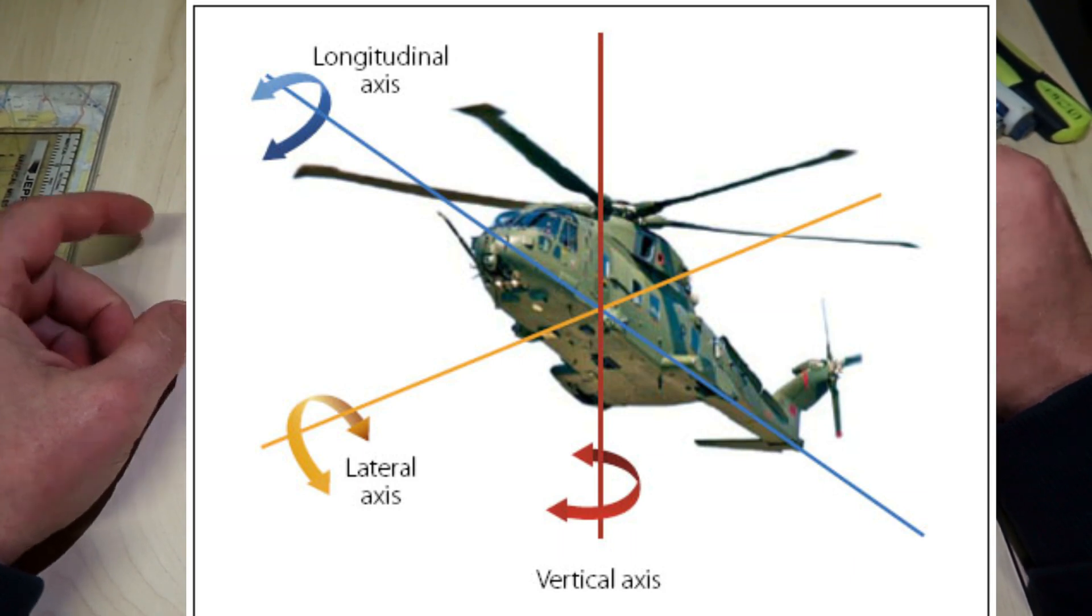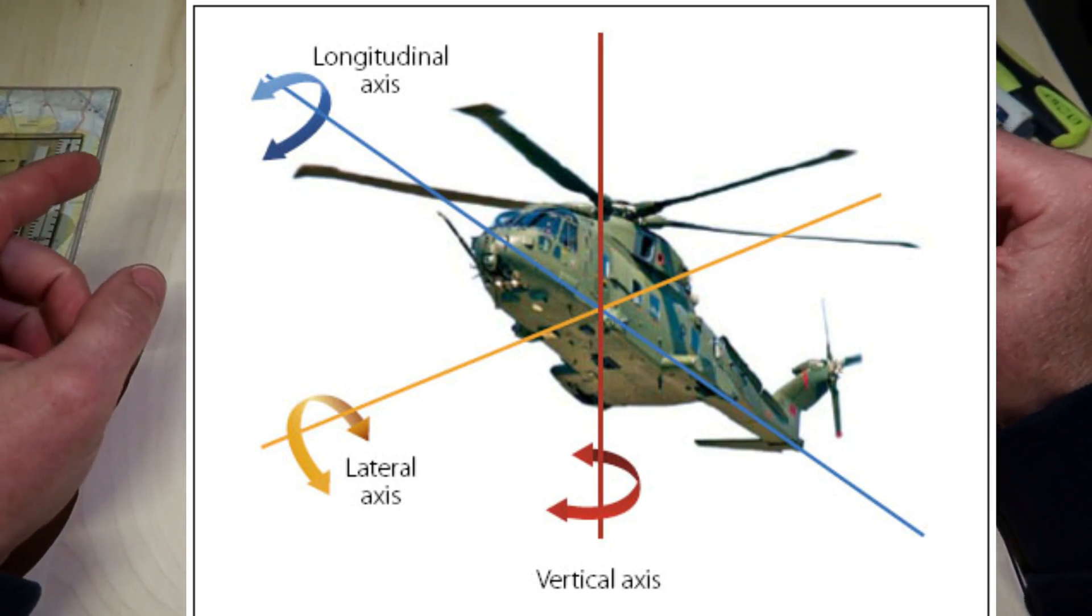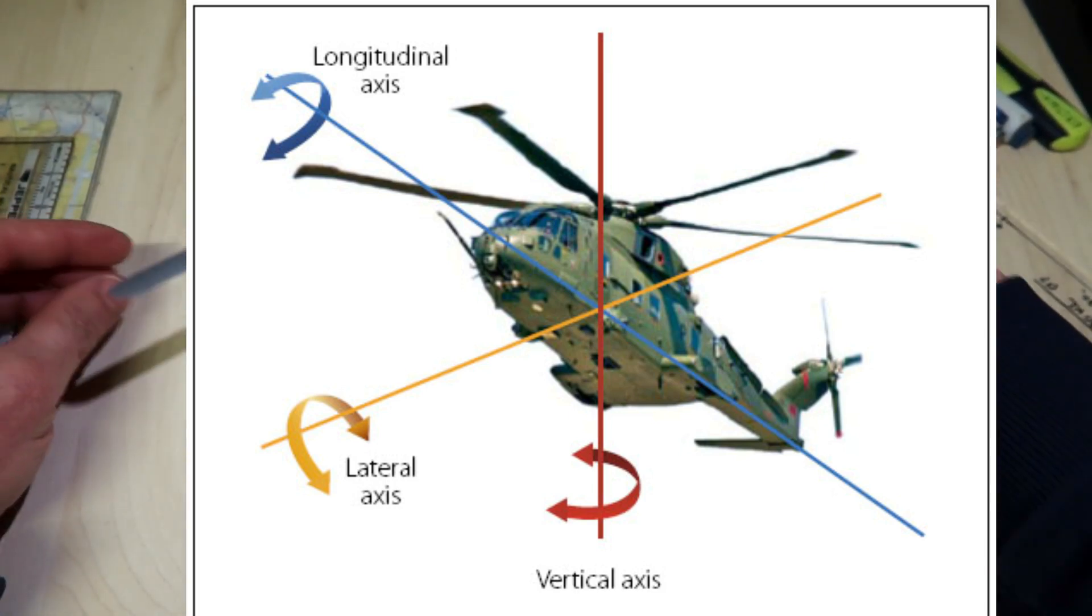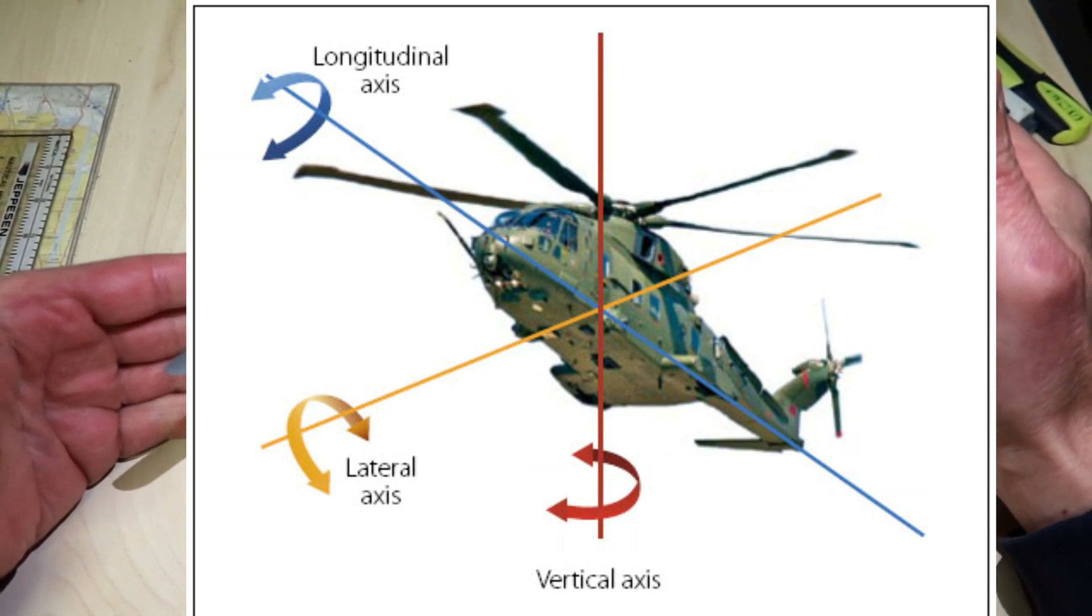The fore-aft axis is called the longitudinal axis. Stability about this axis is called lateral stability.